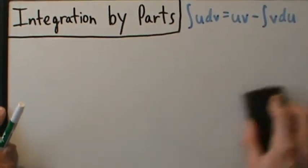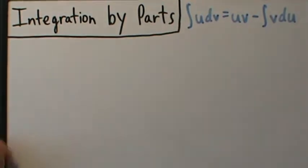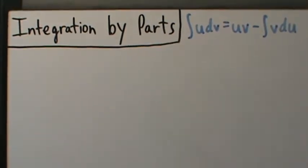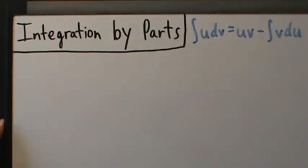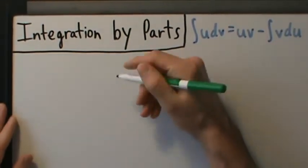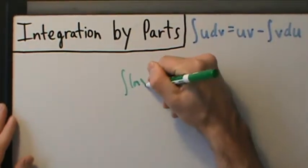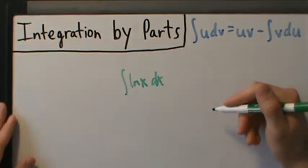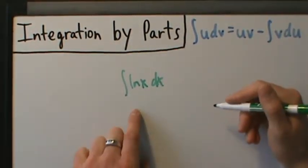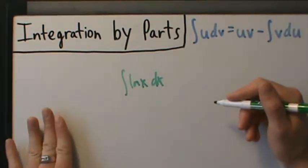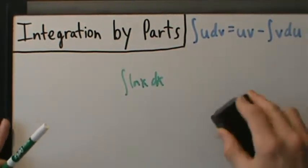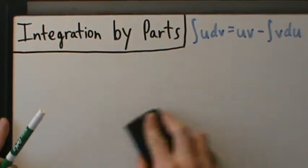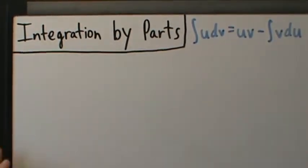There might be other techniques that work, like substitution, and some other techniques we'll talk about later. But integration by parts lets you integrate products. It's also used to integrate other types of functions — like if you want to integrate the natural log of x dx, you can use integration by parts for that. Or if you want to integrate some of the inverse trig functions, it'll work for that also. But we'll talk about those later. For now, let's see where this formula comes from.